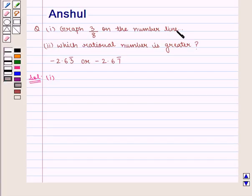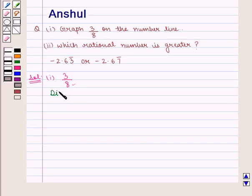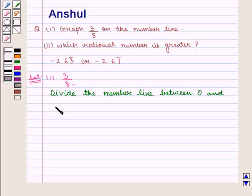In this question, we shall plot the fraction 3 upon 8. The denominator tells us how many parts the unit should be divided, and here the denominator is 8. So we shall divide the number line between 0 and 1 into 8 equal parts.